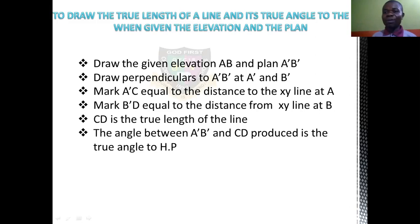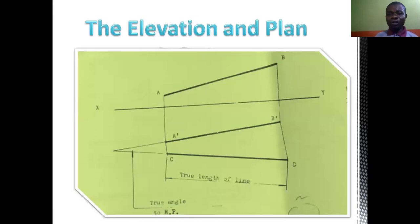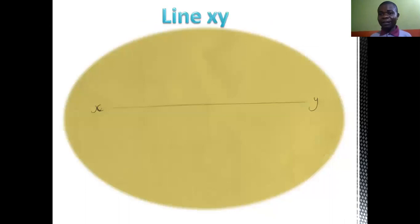Let us look at the stages — this is what we have to do. True length — the elevation and plan is a particular thing. This is the true length. From C to D is the true length — that is this space. Then the angle A prime B prime C D is the angle that we are looking at; this particular angle is the true angle. How do you start? You draw the horizontal line — that's like SY. This one has no measurement; you determine the length on your own.